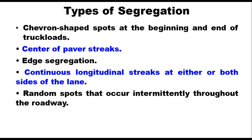Physical segregation can be seen in different types, and these are five types which are commonly observed: chevron-shaped spots at the beginning and end of truck loads, center of paver streaks as segregation, continuous longitudinal streak at either or both sides of the lane, and random spots that occur intermittently throughout the roadway. Recognizing the type of segregation will make it easy to identify its causes.